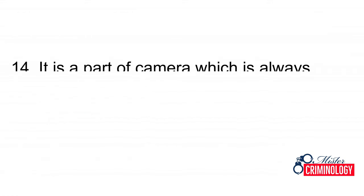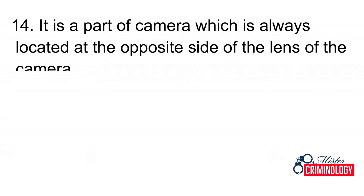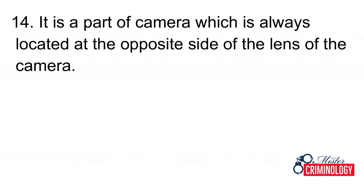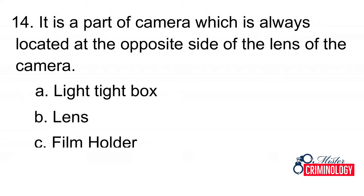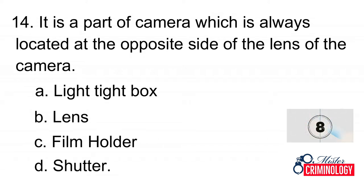Question 14: It is a part of the camera which is always located at the opposite side of the lens. A. Light tight box, B. Lens, C. Film holder, D. Shutter. Answer: C. Film holder.